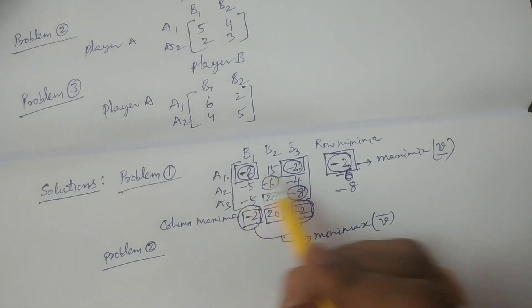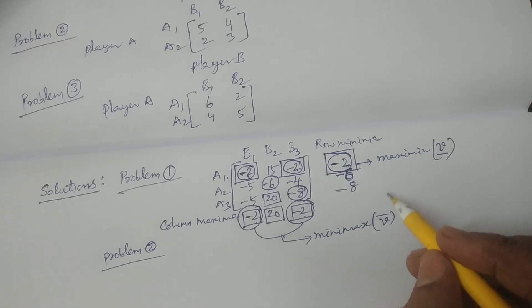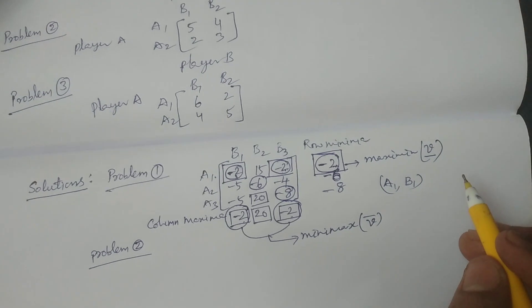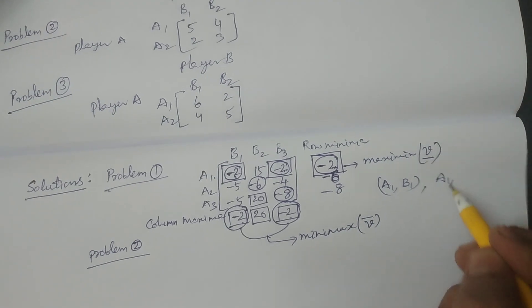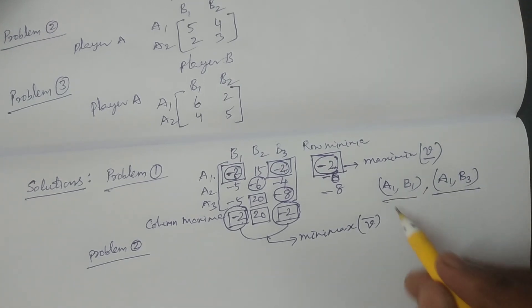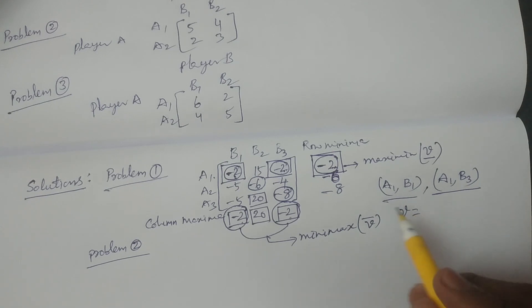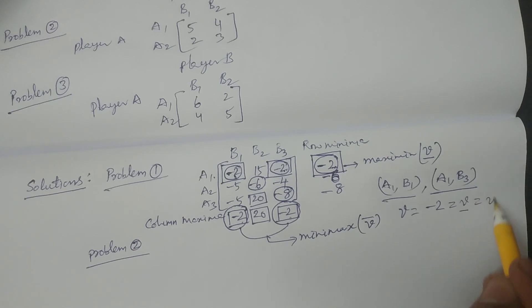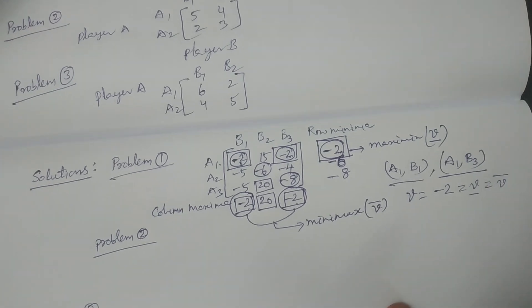This is the maximin value denoted by mu underscore. There are two positions where maximin and minimax coincide: position A1, B1 (first row, first column) and position A1, B3 (first row, third column). The position at which the maximin and minimax values coincide is called the saddle point. Hence there are two saddle points for this problem.